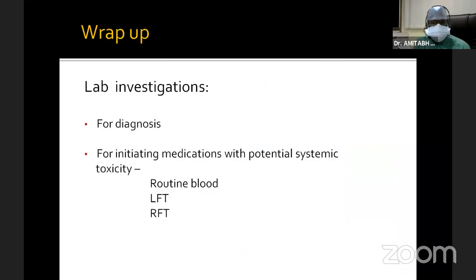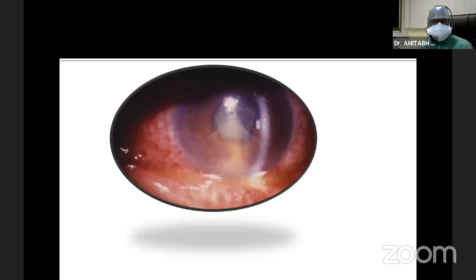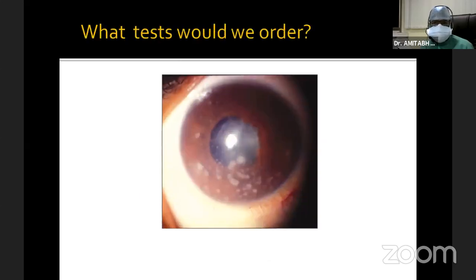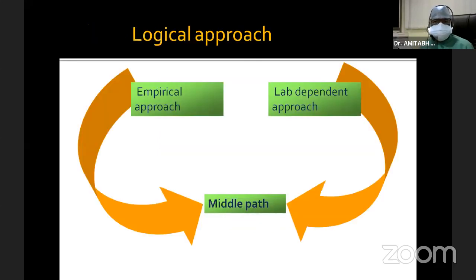To conclude, laboratory investigations not only help us in the diagnosis, but we may have to investigate these patients with routine bloods, liver and renal profile, because we might need to initiate medications with potential systemic toxicity. For an acute non-granulomatous anterior uveitis, we would order ESR, HLA-B27, and ANA. For a granulomatous anterior uveitis, we would do ESR, Mantoux, Quantiferon TB-Gold, serum ACE, and image with chest X-ray or HRCT. A practical approach for investigations in anterior uveitis is neither totally empirical nor lab-dependent, but a middle path with tailored lab investigations on a case-to-case basis.